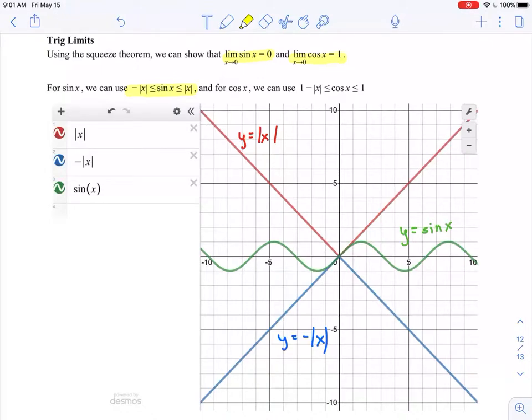Sine of x is always in between my red function and my blue function, my upper and lower function. So as I get closer and closer to 0, because absolute value is a piecewise defined function, we can break it down into parts and talk about polynomials. Both of these limits converge to 0, and since sine of x is stuck between those two on both sides, there's nowhere for it to go other than 0. This is a really nice visual representation of the squeeze theorem.